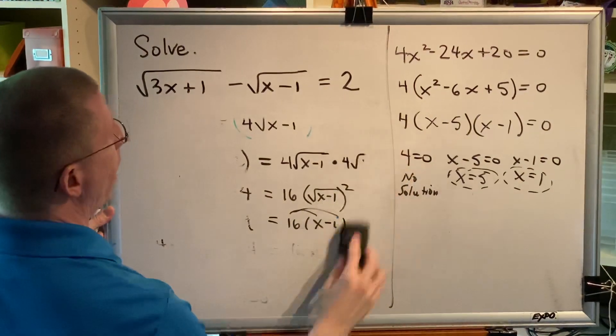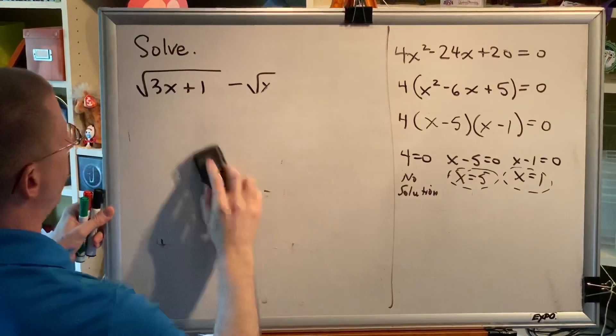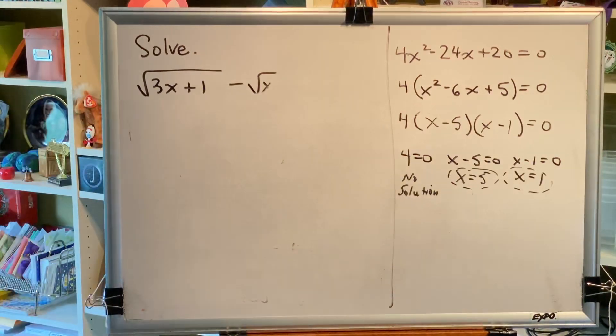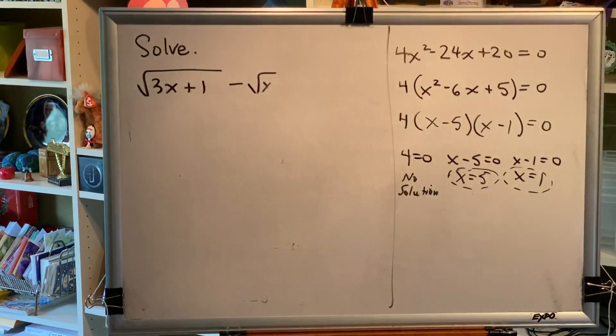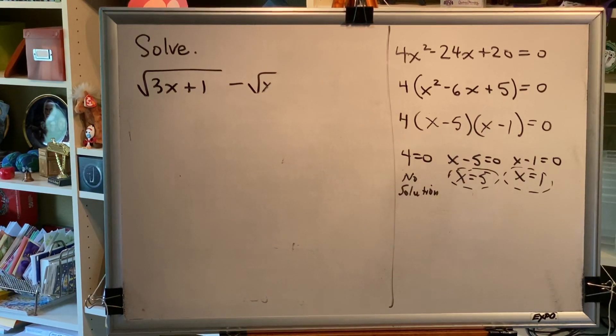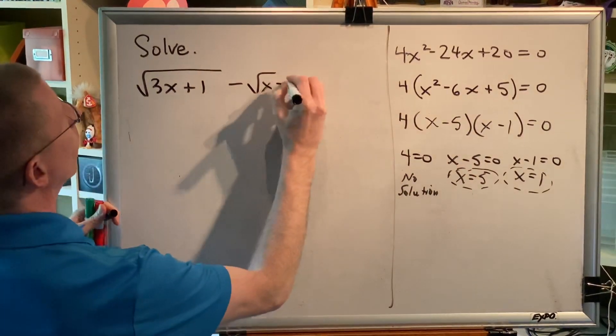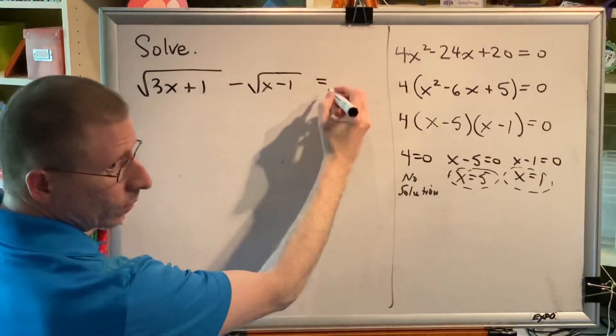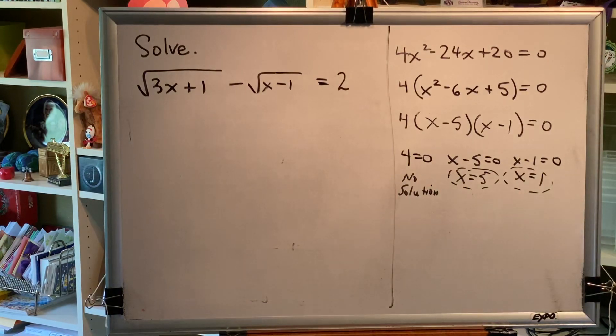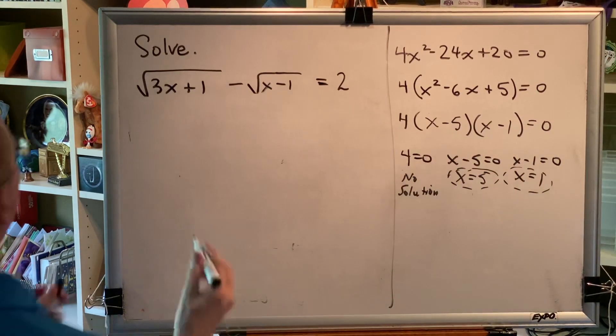So back we go to the beginning. We're going to replace the x in our original equation with each one of our potential solution values. So the first thing we're going to check is 5.